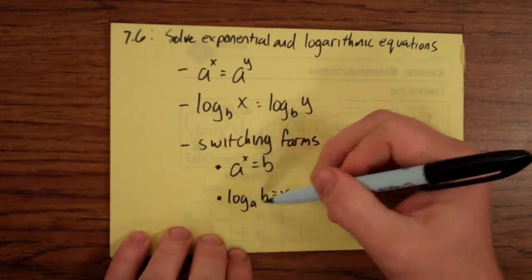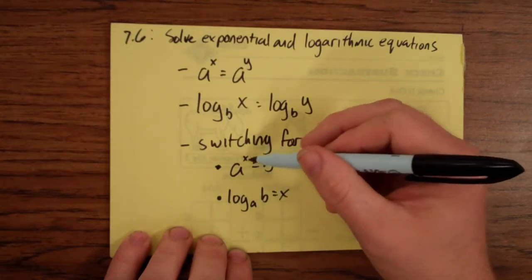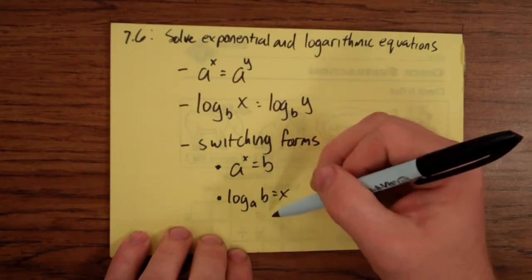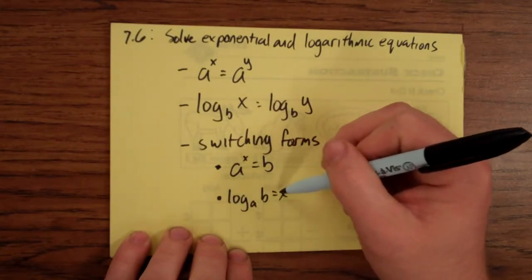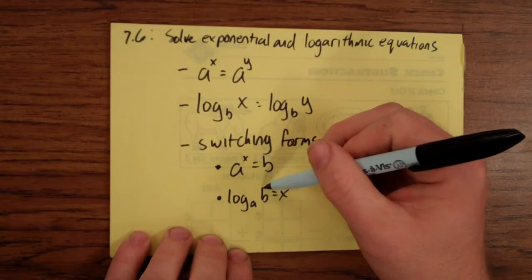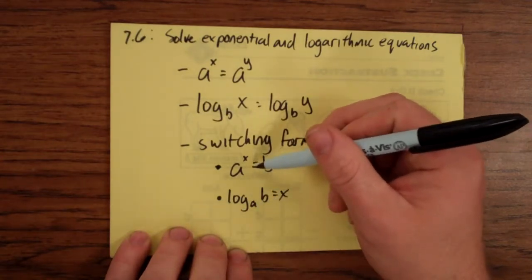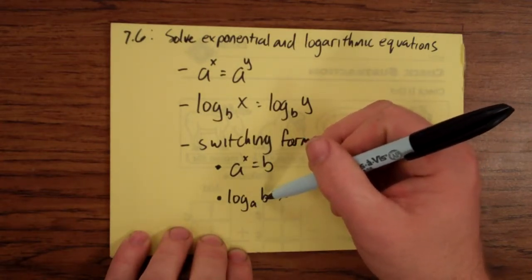I would take this equation and switch it to here to solve for the exponent if there was a variable there. I might start out with an equation like this that has log base a of b equals x, and I want to solve for b. And then I would take this and put it in exponential form to solve for b.